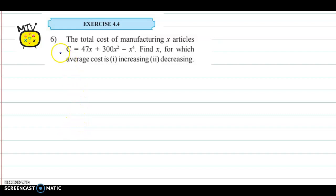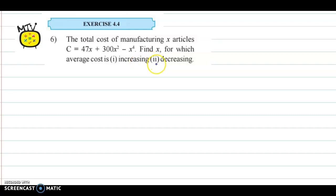Hello and welcome back. We now discuss question number 6 from exercise 4.4. The question is: the total cost of manufacturing x articles is c equal to 47x plus 300x square minus x raised to 4. Find x for which the average cost is increasing — that's the first case — and second, when the average cost is decreasing.